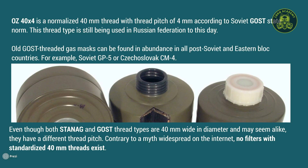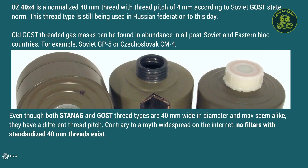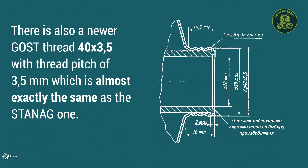Even though both STANAG and GOST thread types are 40mm wide in diameter and may seem alike, they have a different thread pitch. Contrary to a myth widespread on the Internet, no filters with fully standardized 40mm threads exist. There is also a newer GOST thread — 40x3.5 — with a thread pitch of 3.5mm, which is almost exactly the same as the STANAG one.